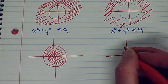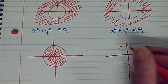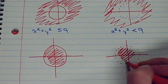What about not or equal to? Well, that would mean I'd have a dotted line or a dashed line and I'd be just including the points inside.